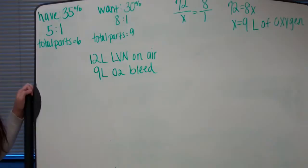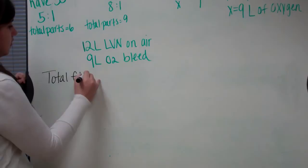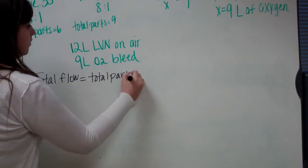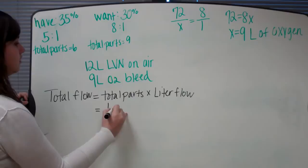Now I'm going to show you how to find your total flow to make sure that you're meeting your patient demand. So, total flow equals total parts times liter flow. So we found out that the 12 liter LVN on air is 35%, so total flow equals total parts. 35% total parts we figured out was 6.